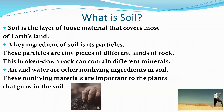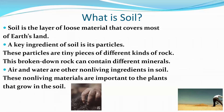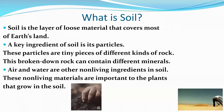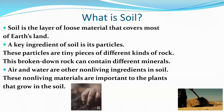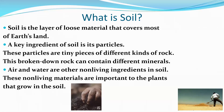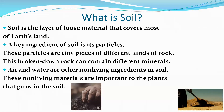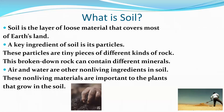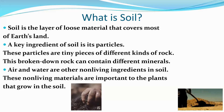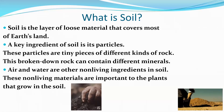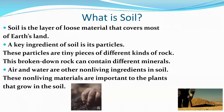Like we were talking about yesterday, soil is the layer of loose material that covers most of Earth's land. A key ingredient of soil is its particles — tiny pieces of different kinds of rock. This broken down rock can contain different minerals. Air and water are other nonliving ingredients in soil, and these nonliving materials are important to the plants that grow in the soil.